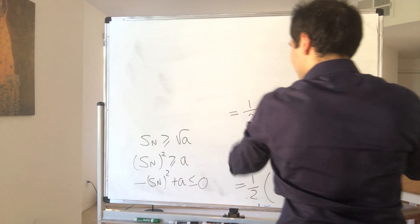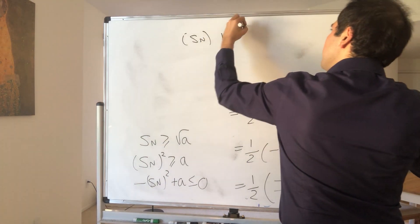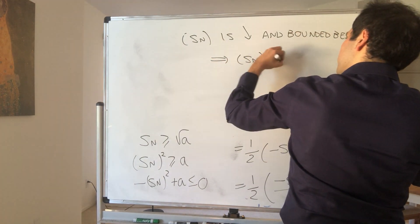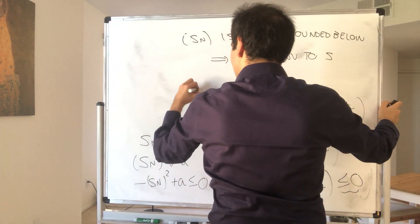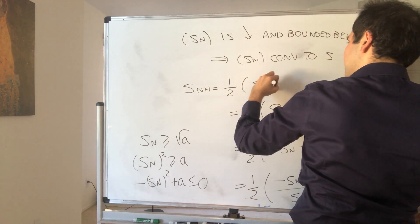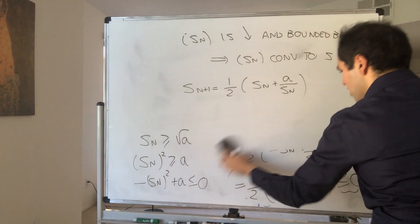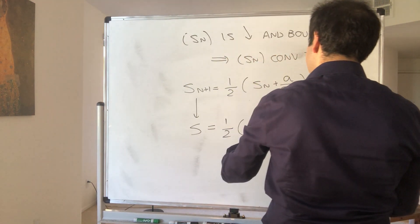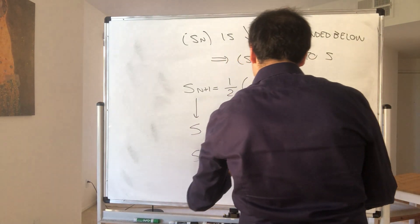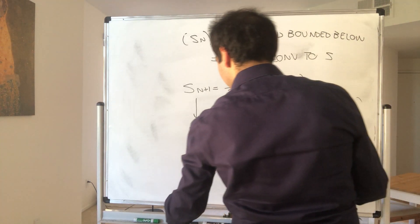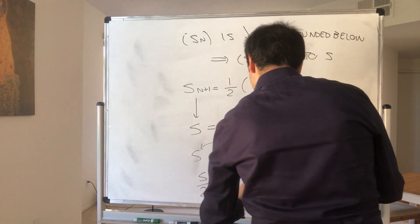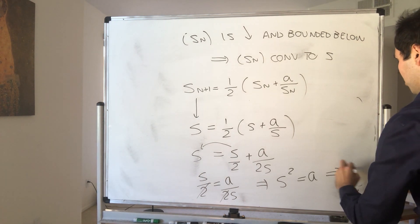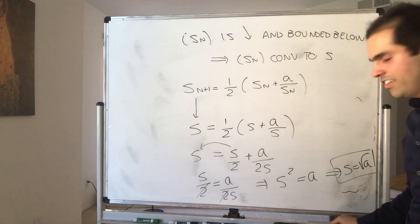Therefore s_n is non-increasing and bounded below, so by the Monotone Sequence Theorem, s_n converges to some limit S. Now, our recurrence is s_{n+1} equals one-half times s_n plus a over s_n. Letting n go to infinity, S equals one-half times S plus a over S. So S equals S over 2 plus a over 2S, meaning S over 2 equals a over 2S. The 2's cancel and we get S squared equals a. Since the limit is positive, S equals the square root of a. So the limit itself is the square root of a. Thank you very much.